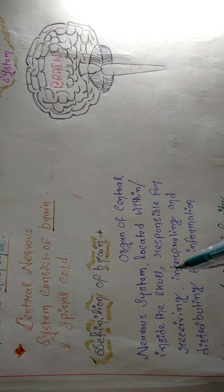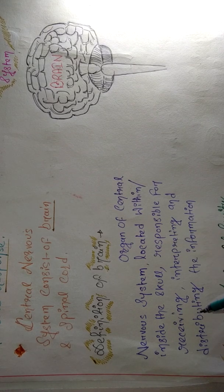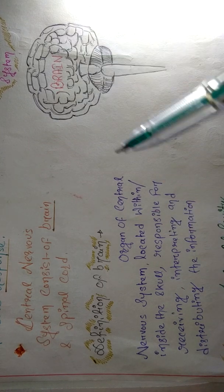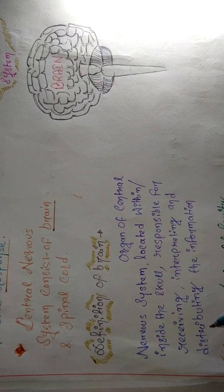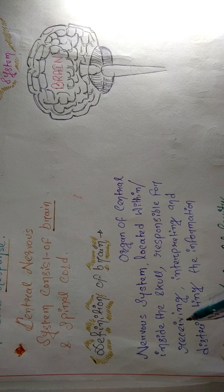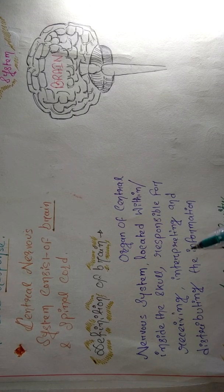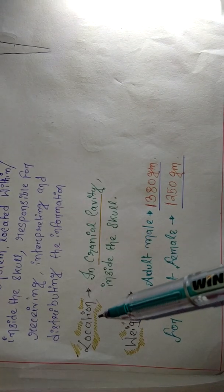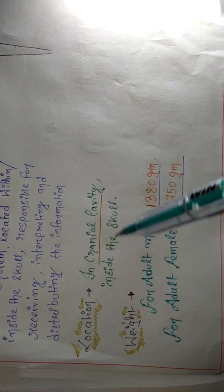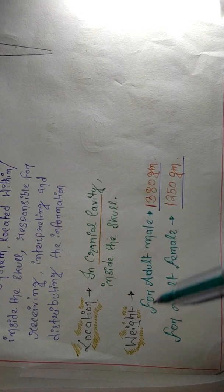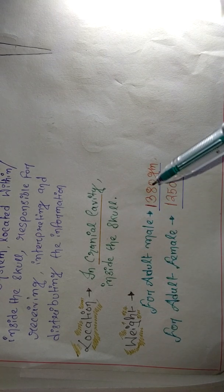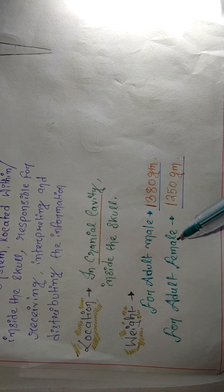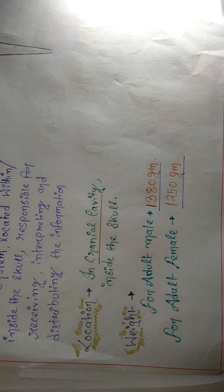The brain is responsible for receiving, interpreting, and distributing information. Receiving means they receive information; interpreting means they understand the information; and they distribute the information to the peripheral nervous system, which takes it to the target cell. Location: in the cranial cavity, inside the skull. Weight: for adult male it is 1380 grams, and for adult female it is 1250 grams.